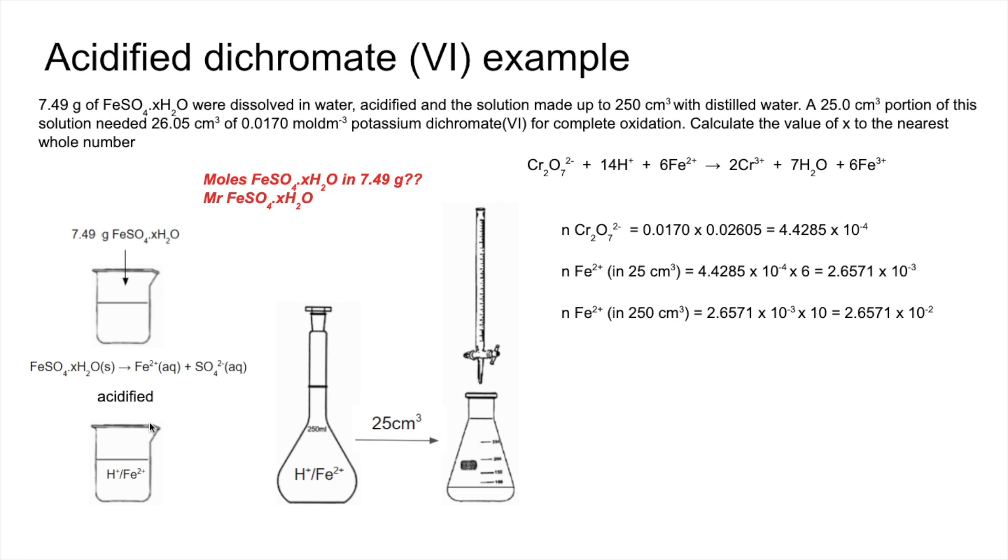Those moles are the same as those moles, which are the same as those moles. So we've got that many moles of FeSO4·XH2O. So the MR must be the mass divided by those moles.